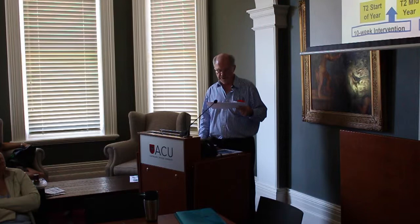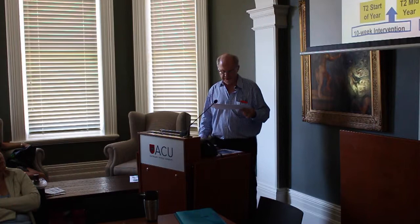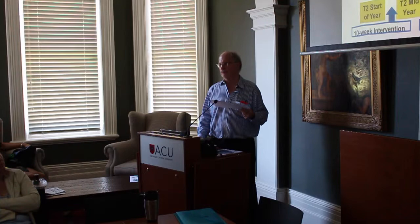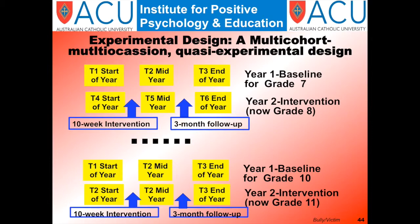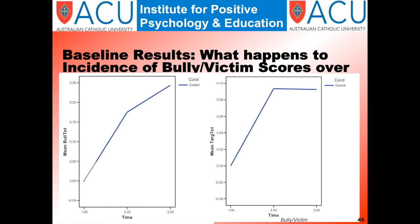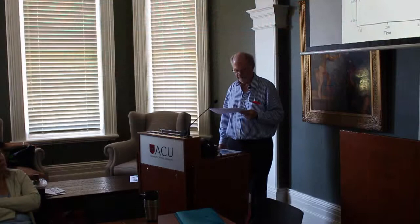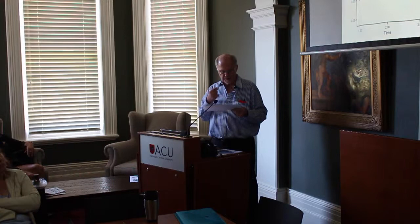Results for each year group during the experimental year could be compared to the same year group from the previous baseline year. When there's no intervention, there are dramatic increases in bullying and victim scores over the course of the year — bullying increases between the start and middle of the school year and continues to increase, while victimization increases from the start to middle and then levels off. It is in relation to this baseline control that we compare the effects of the intervention. This also shows why a simple pre-test post-test comparison is relatively meaningless or even misleading.